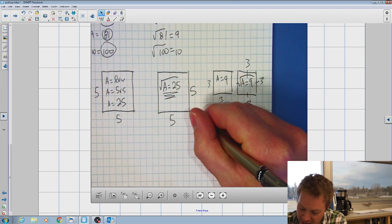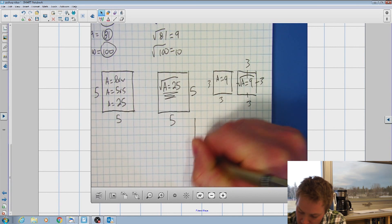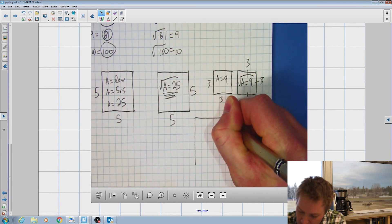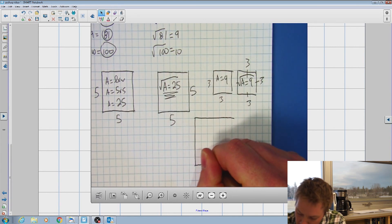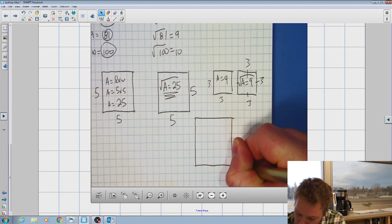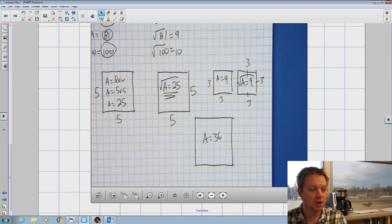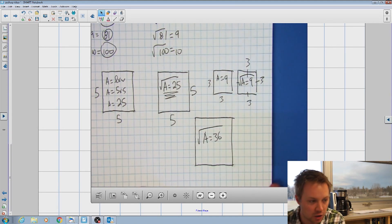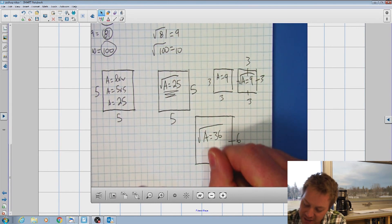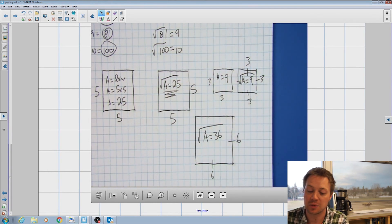One more example. Let's say I'm given this square. And I'm told that the area is 36. Well, what I need to do is simply take the square root of that to find that these side lengths are six. Fairly simple.